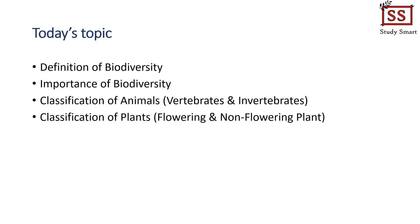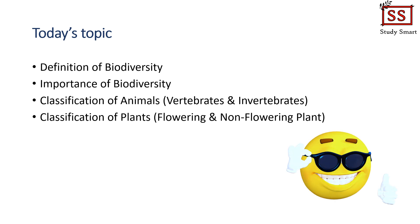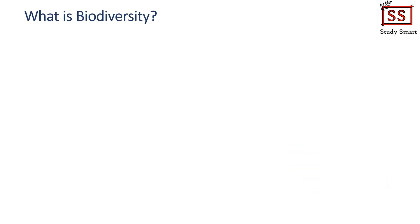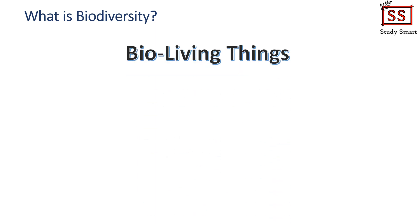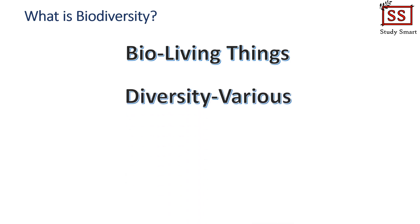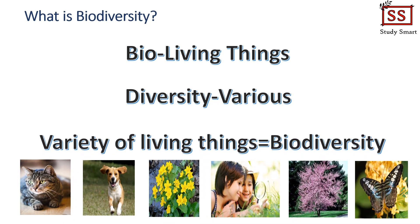So let's start. First, let's see what is meant by the word biodiversity. The word biodiversity can be divided into two segments: bio and diversity. Bio is referring to living things while diversity, as we all know, refers to various or different types. Together, the word biodiversity refers to the variety of living organisms in a given ecosystem.